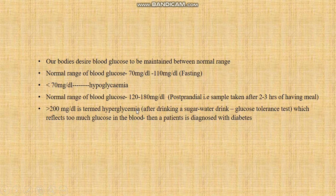More than 200 mg per deciliter is termed hyperglycemia. This is diagnosed after drinking a sugar water drink, also known as a glucose tolerance test, two or three times. If it reflects too much glucose in the blood, then the patient is diagnosed with diabetes.